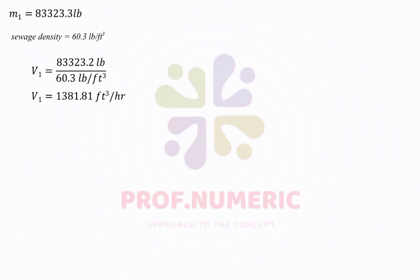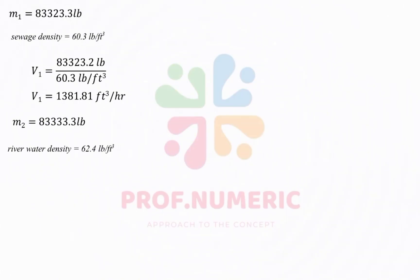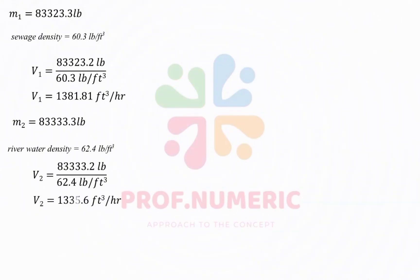The volumetric flow rate of the sewage stream V1 = 1,381.81 cubic feet per hour. If we are asked to calculate the flow rate of the river stream, we use M2 = 83,333.3 pounds per hour and river water density = 62.4 pounds per cubic foot. Using the same relation: V2 = 83,333.3 / 62.4 = 1,335.6 cubic feet per hour. So these are the final answers.